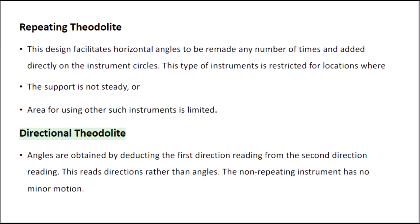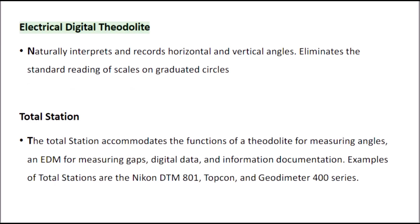Directional Theodolite: Angles are obtained by deducting the first direction reading from the second direction reading. This reads directions rather than angles. The non-repeating instrument has no lower motion. Electrical Digital Theodolite: This type naturally interprets and records horizontal and vertical angles, eliminating the standard reading of scales on graduated circles.